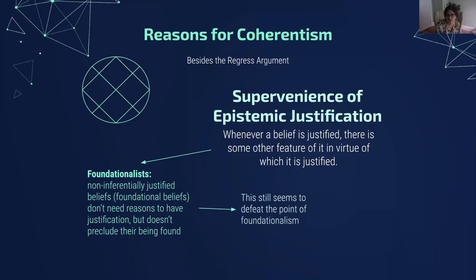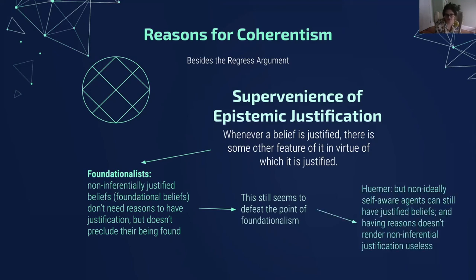The coherentist responds: this still seems to defeat the point of foundationalism. If you could give a justification for your justification, even if it was supposed to be basic, then is it really basic? Are you really a foundationalist or secretly a coherentist? Humer responds: non-ideally self-aware agents can still have justified beliefs — squirrels, small children, and people with cognitive deficits could still have justified beliefs. Having reasons for their justified beliefs doesn't render non-inferential justification useless. So there's still a role for both inferential and non-inferential justification — we can all be friends and still have foundationalism, says Humer. The coherentist might say maybe small children are not self-aware about why their justified beliefs are justified, but what matters is that they do actually have a further justification.